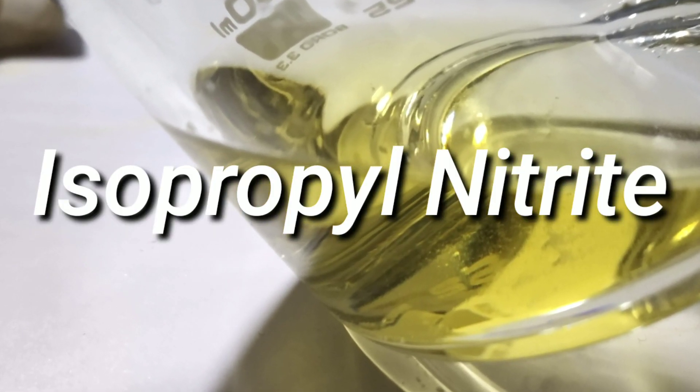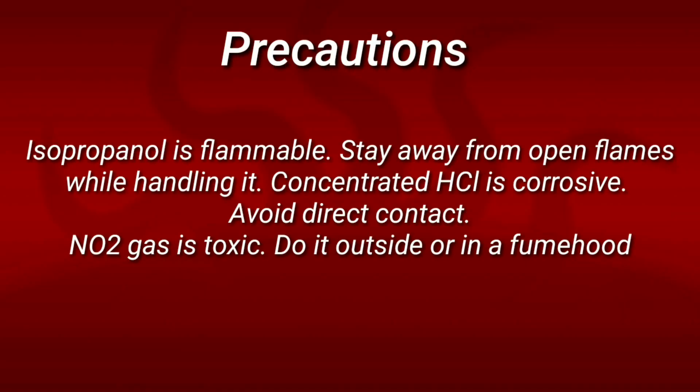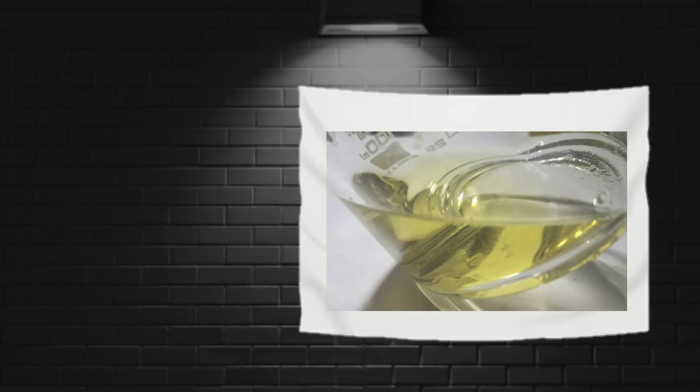Hello friends, in this video we will synthesize isopropyl nitrite. Isopropyl nitrite is an alkyl nitrite made from isopropyl alcohol. It is a pale yellow colored clear fluid.